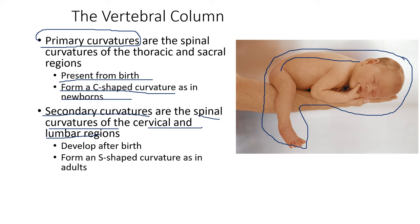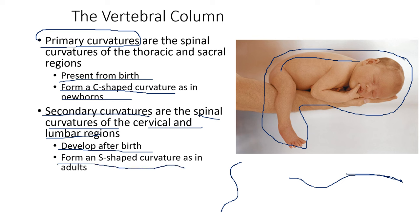Secondary curvatures are the spinal curvatures of the cervical and lumbar regions. As you grow older, the spine develops into an S-shape. These curvatures develop after birth and form an S-shaped curvature as an adult.